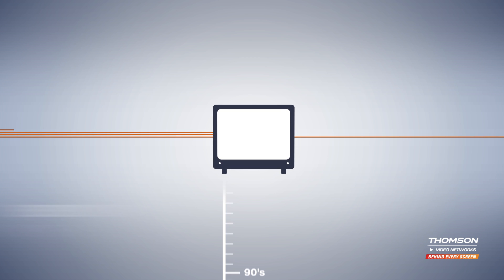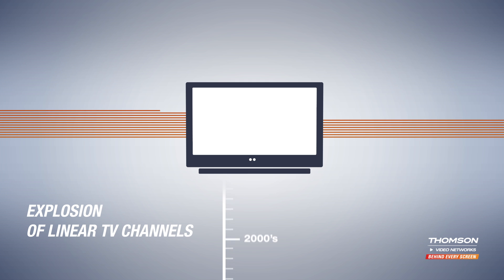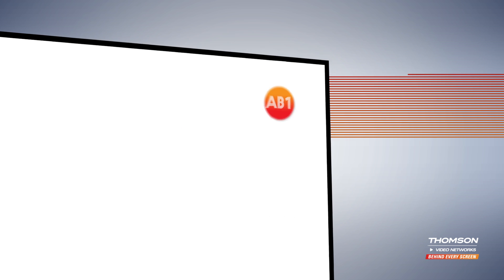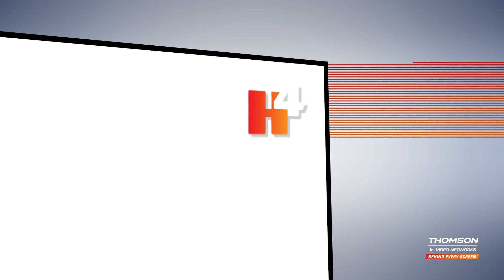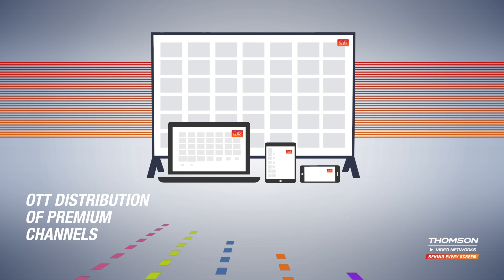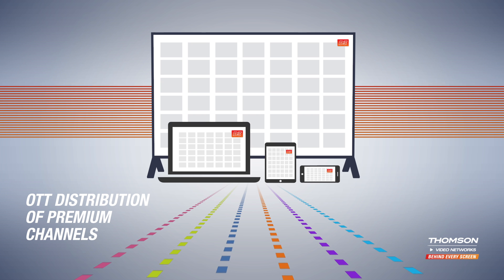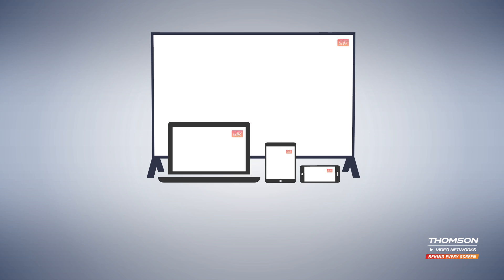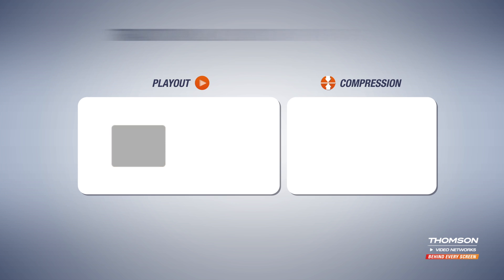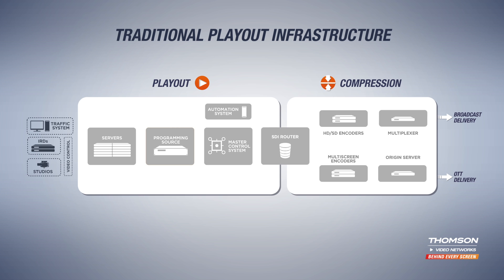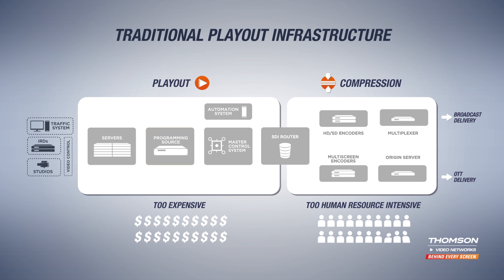Over the last few years, we've seen an explosion of new linear TV channels — channels that need their own distinct graphic identity. At the same time, OTT distribution of premium channels has become a must to stay relevant and competitive. Traditionally, the functions of video playout have been implemented in costly, best-of-breed playout systems. But this traditional approach is simply too expensive and too human resource intensive.